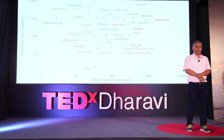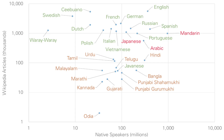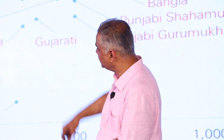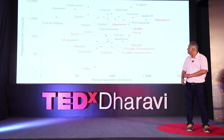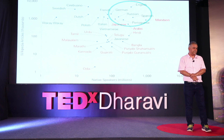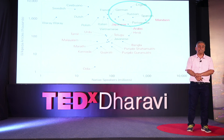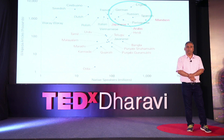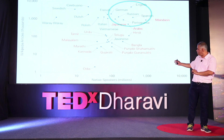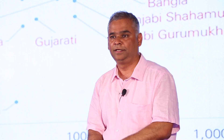This is a problem that actually bothers me quite a bit. This graph on Wikipedia shows along the X axis the languages according to number of speakers in millions, and along the Y axis the number of Wikipedia articles in thousands. In this corner are languages like English, German, Russian, Spanish, Portuguese, and Mandarin — all with a very large number of native speakers as well as a very large number of Wikipedia articles, both above a hundred million native speakers and above a million Wikipedia articles.